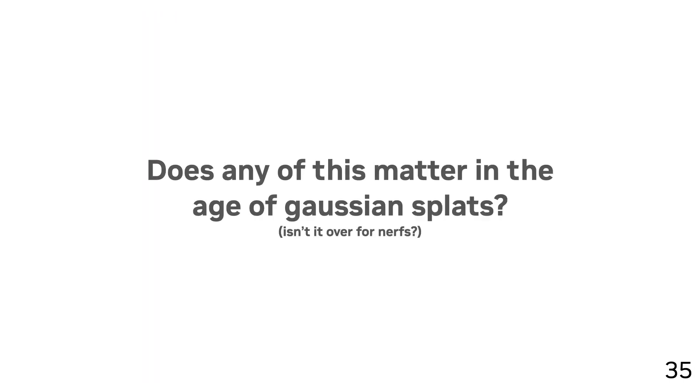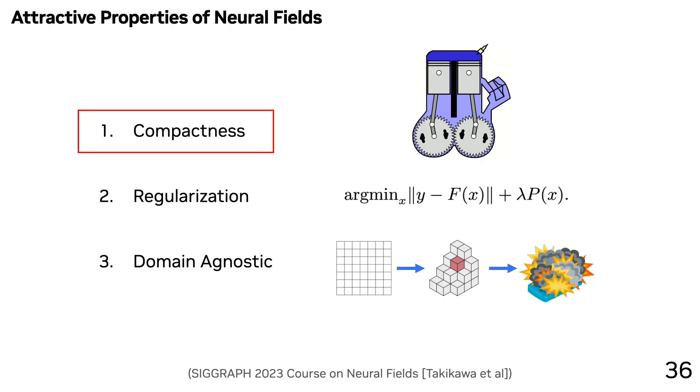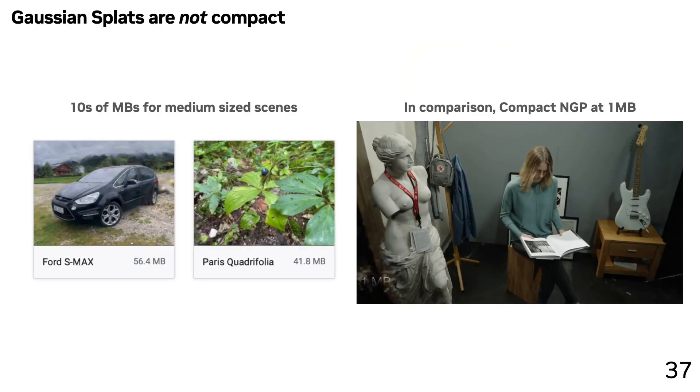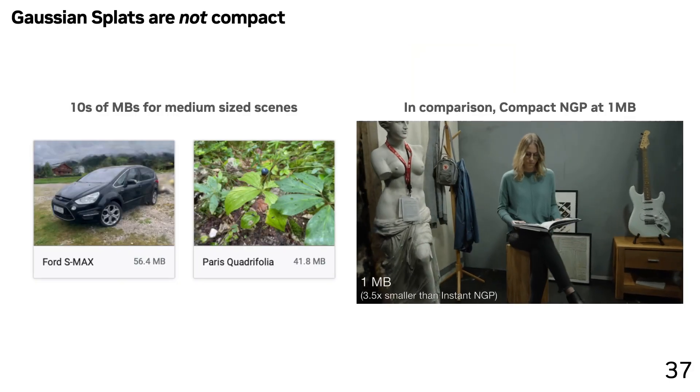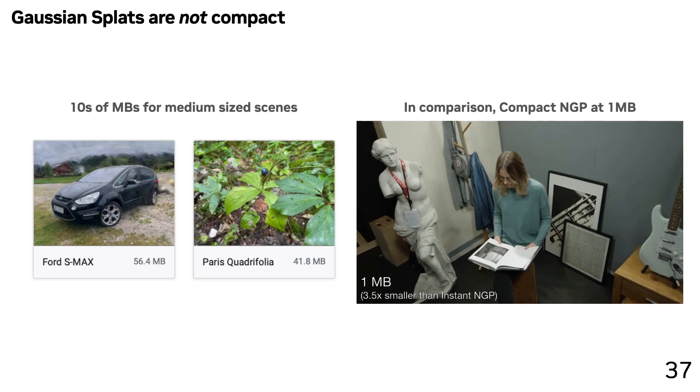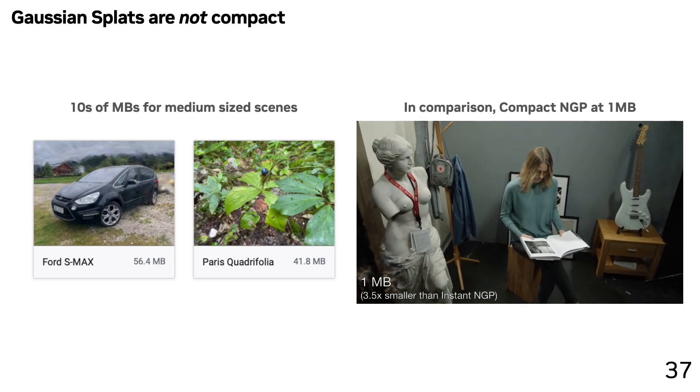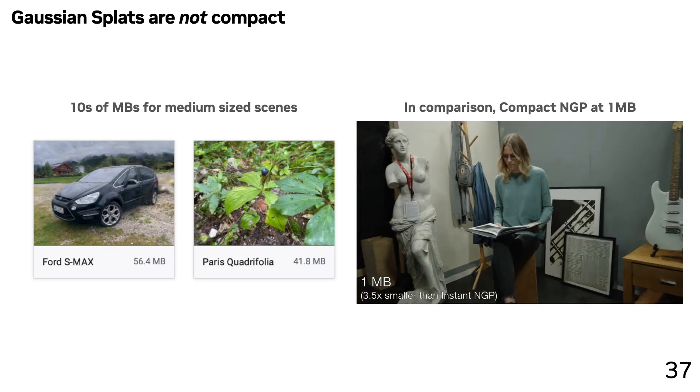And that's a wrap for the results. But at this point, you might be wondering if any of this matters in the age of Gaussian splats that has come in the last couple of months. Lots of Twitter influencers are saying it's over for NeRFs. I would argue that our work still does matter. If you go back to why neural fields were interesting at all in the first place, compactness was one of the attractive factors. As a matter of fact, Gaussian splats are not compact. While Gaussian splats take tens of megabytes for medium-sized scenes, we're able to do that same scene at 1 megabyte, a 50x difference in size.